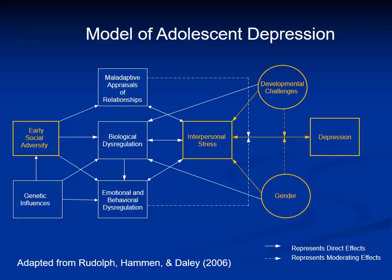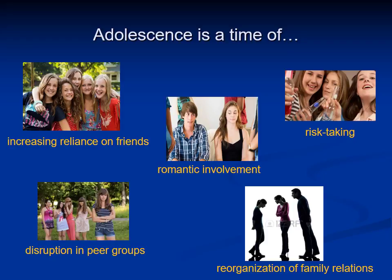We first set out to understand the types of social contextual challenges that girls face as they progress through adolescence. Adolescence is a time when youth have to create independent social networks and begin to rely more on their friends for intimacy and support. There's often a disruption in peer groups as they form different cliques and friendships, and they begin to get involved in romantic relationships. Adolescence is also a time when youth have more control over selecting their own friends, so they may select into stressful friendships and engage in more risk-taking behaviors that can create stress in their relationships. Finally, a reorganization of the family occurs as they try to balance between autonomy and connectedness.